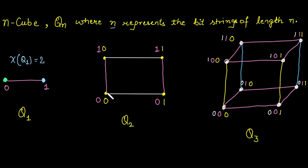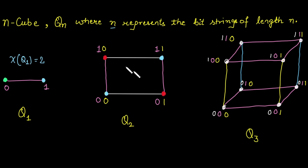For Q2, vertex 00 is assigned blue. It is adjacent to 01 and 10, so those cannot be blue. Vertex 11 is not adjacent to 00, so it can also be blue. Vertices 01 and 10 are not adjacent to each other, so they both get red. Total colors used is 2, so the chromatic number of Q2 is 2.